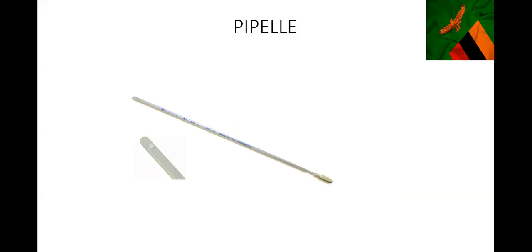This is a Pipelle, used for getting an endometrial biopsy as an outpatient procedure. Patients come to the clinic and we do an endometrial biopsy. You can see how it's shaped like an MVA cannula but much smaller, with a hole in front. This is a Pipelle - you insert it in the cervix, scrape, and the sample comes inside the Pipelle.